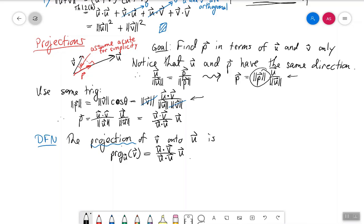Alright, let's do an example. Let's have u equal minus 1, 1, 0, and v equal to 1, 2, 3.